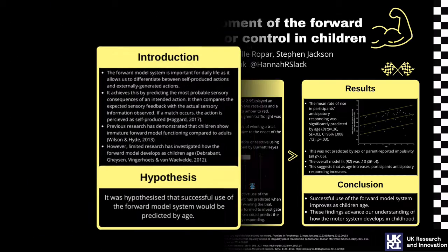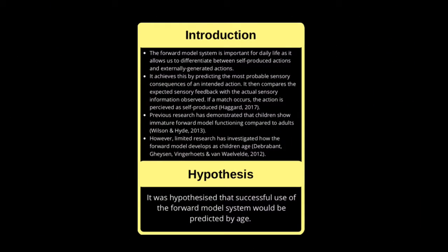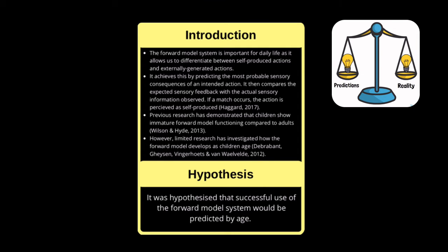Beginning with the introduction, the Forward Model is a computational model of voluntary motor control. Previous research has argued that the Forward Model is important for daily life because it allows us to differentiate between actions produced by ourselves and actions performed by other people. It achieves this by predicting the most probable sensory consequences of our intended actions.